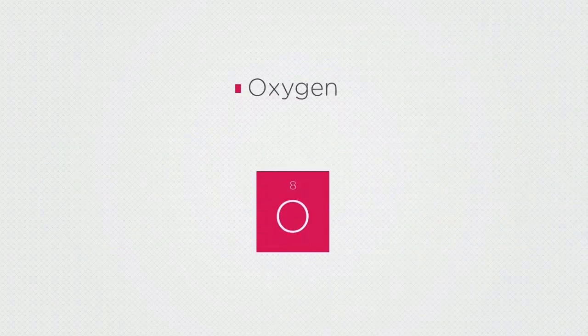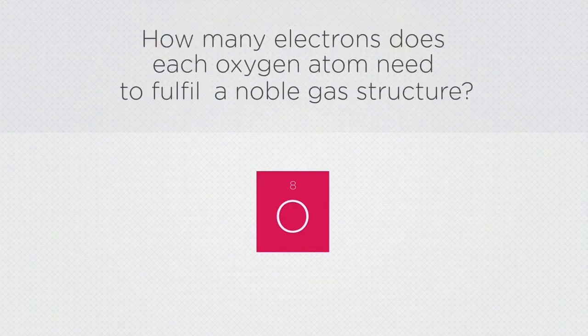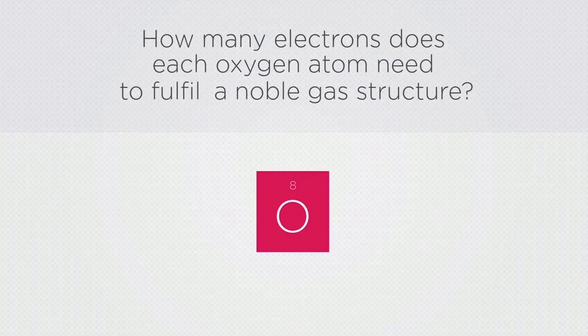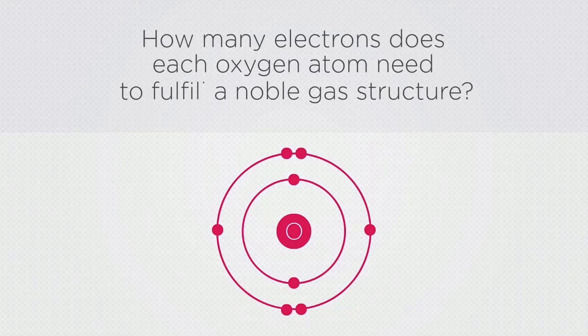In the next example, we are going to consider oxygen. It is in group six. Therefore, how many electrons does each oxygen atom need in its outer shell to fulfil a noble gas structure? Remember, oxygen has eight electrons in total, so we would need to fill the second shell.